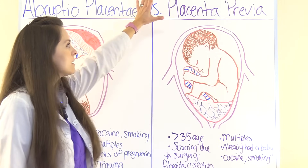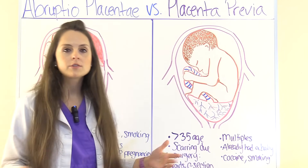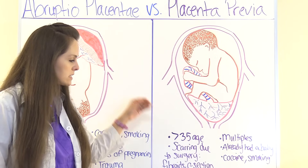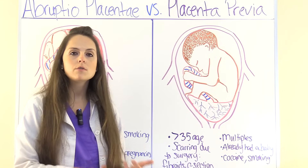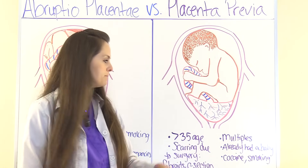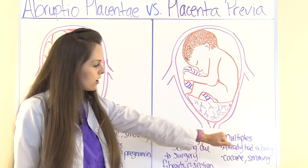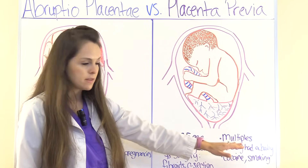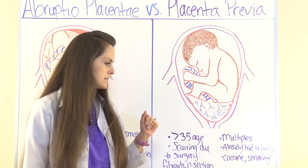Causes of Placenta Previa include advanced maternal age — greater than 35 — or scarring in the uterus due to surgery like removal of fibroids or a C-section. Carrying more than one child like twins or triplets, having had a previous baby, or using cocaine or smoking cigarettes can also cause it.